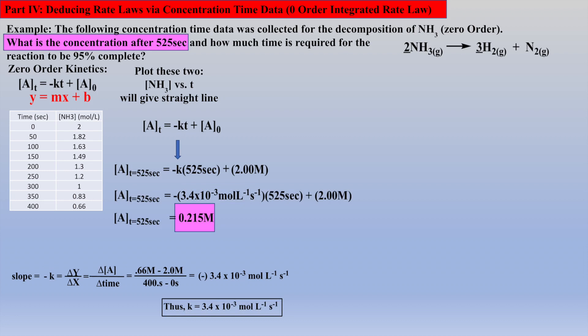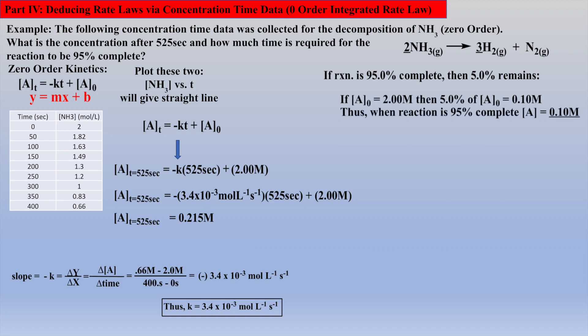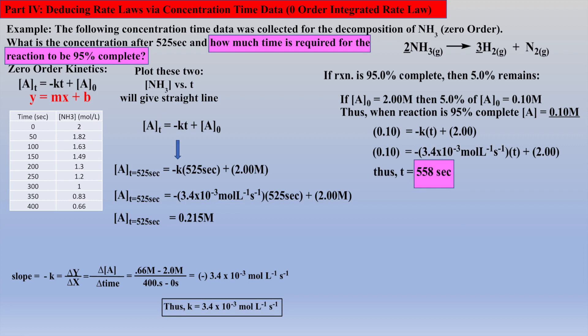The second part of this question is another common query: how much time needs to pass for the reaction to be x percent complete? The key here is to recognize that if the reaction is 95 percent complete, then 5 percent remains. Thus, 5 percent of the initial concentration is 0.10 molar. Using these values, we realize we need the rate constant, which has been previously calculated, and substitute it into the equation to yield the time required for the reaction to be 95 percent complete.